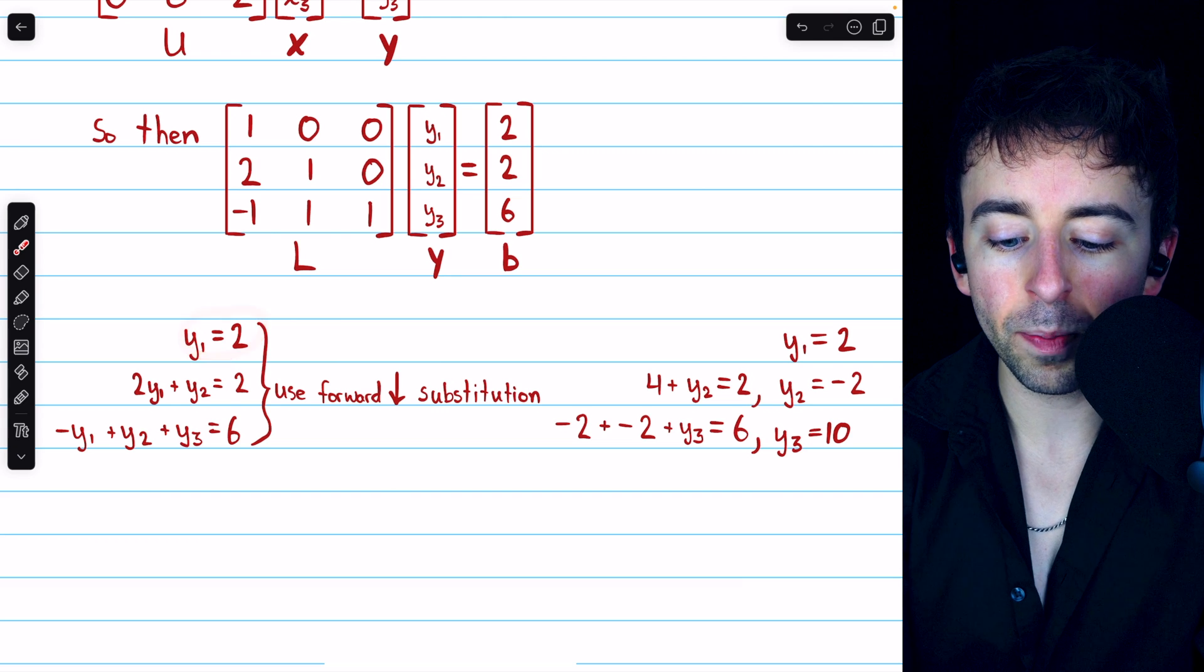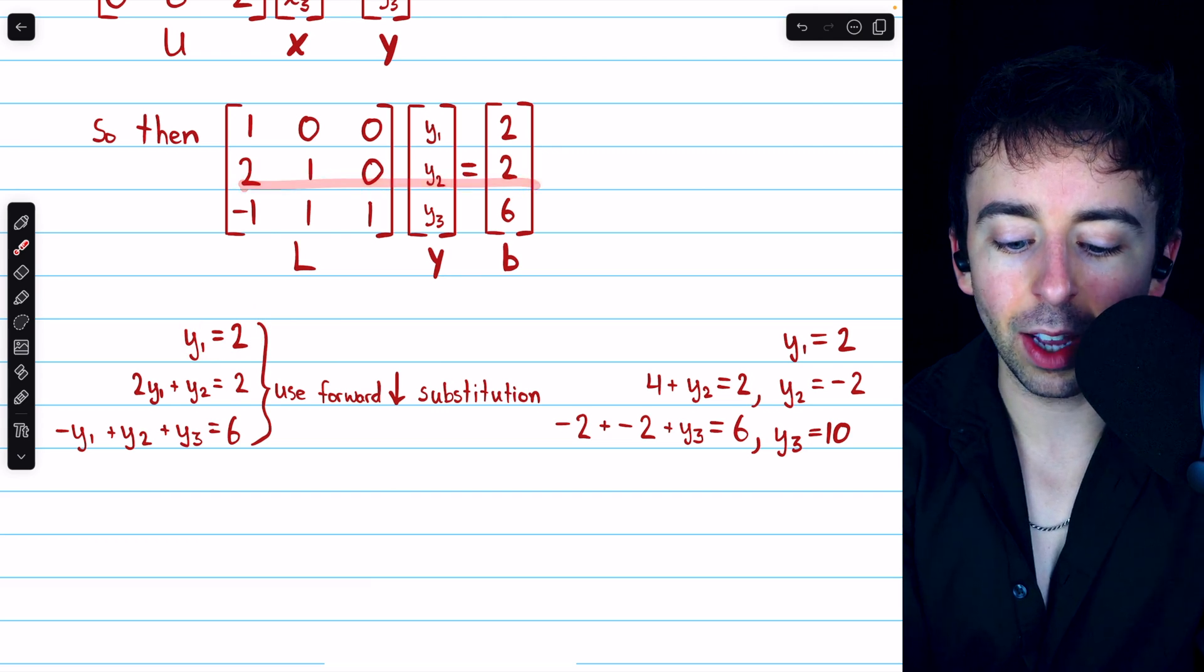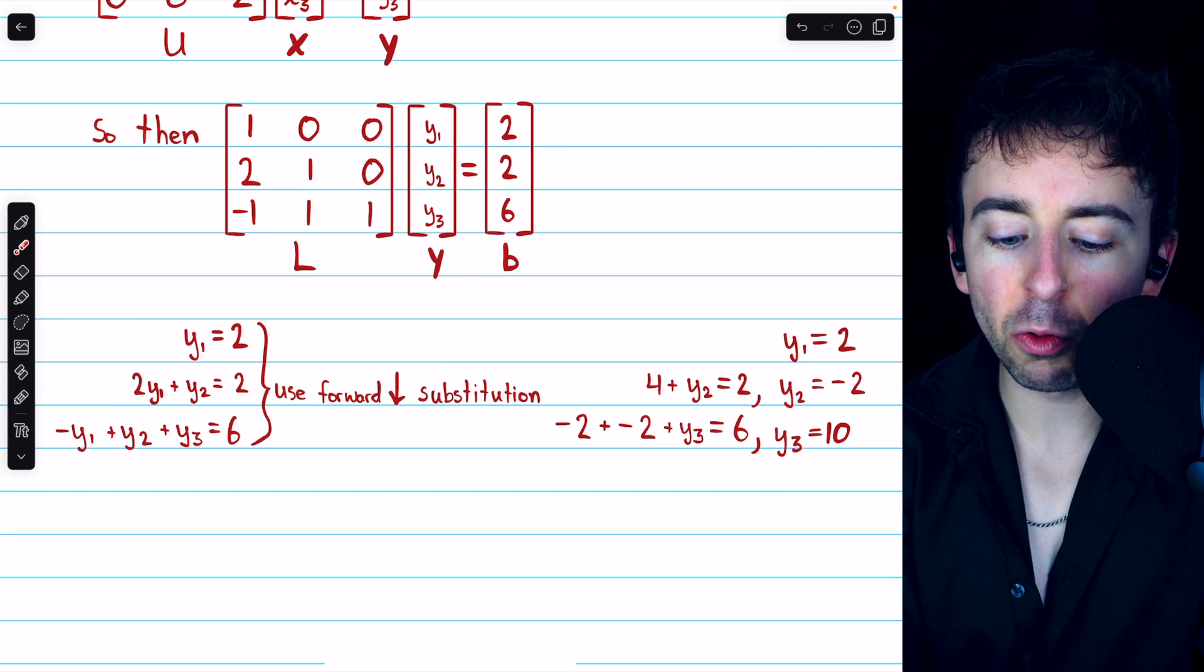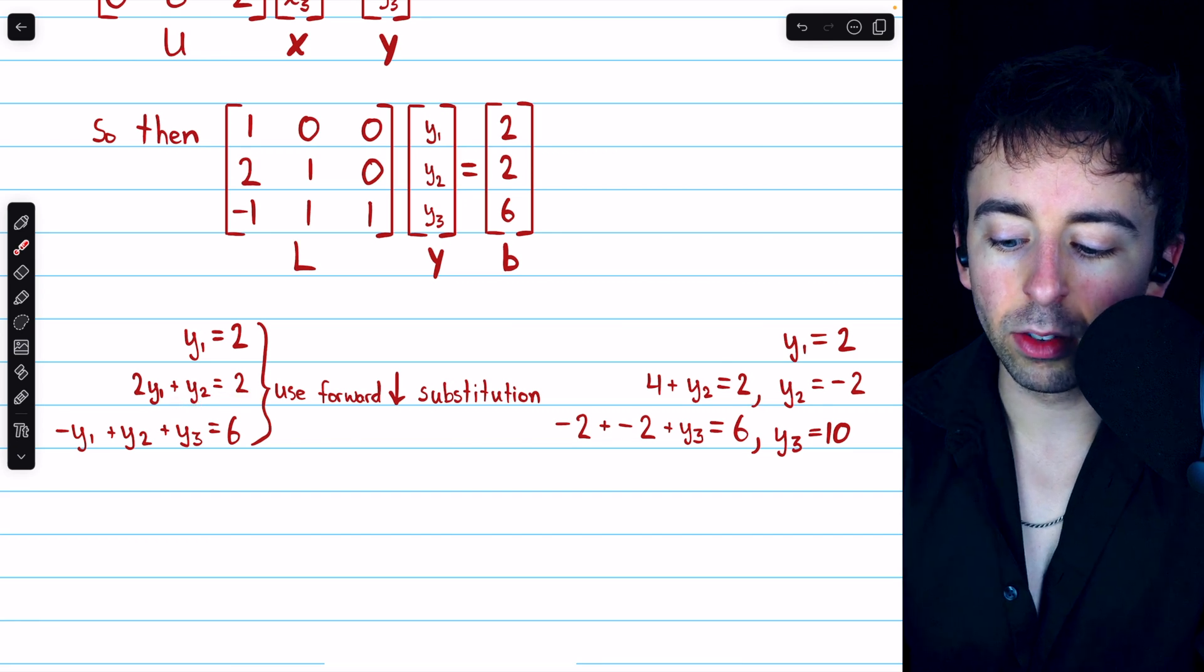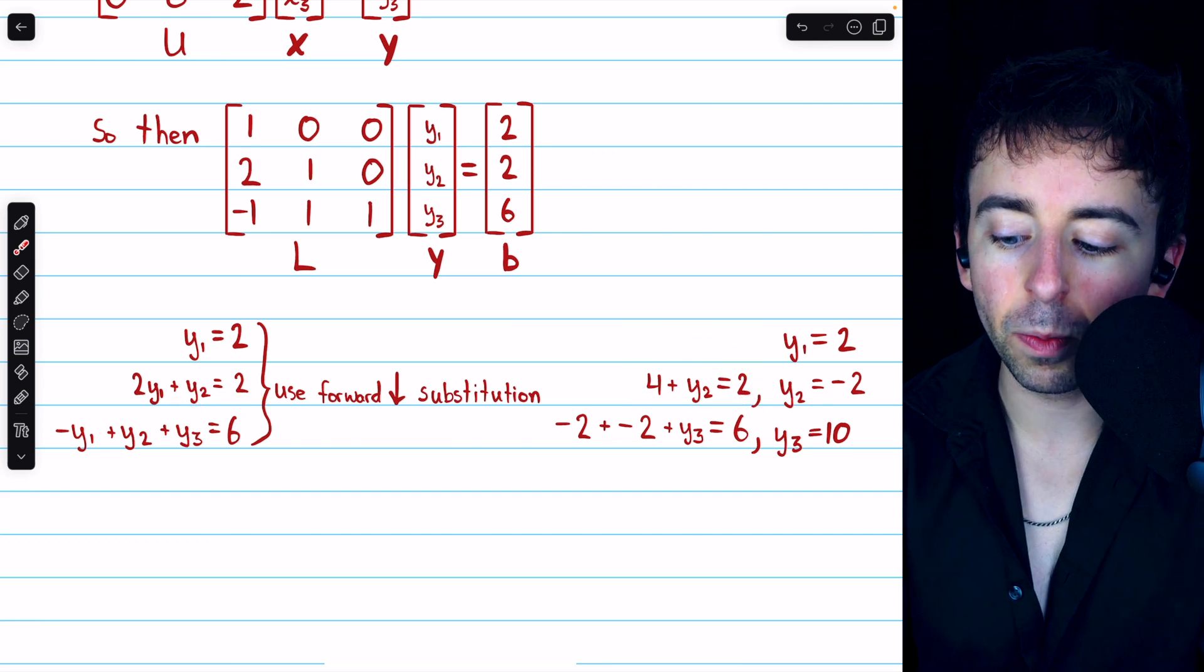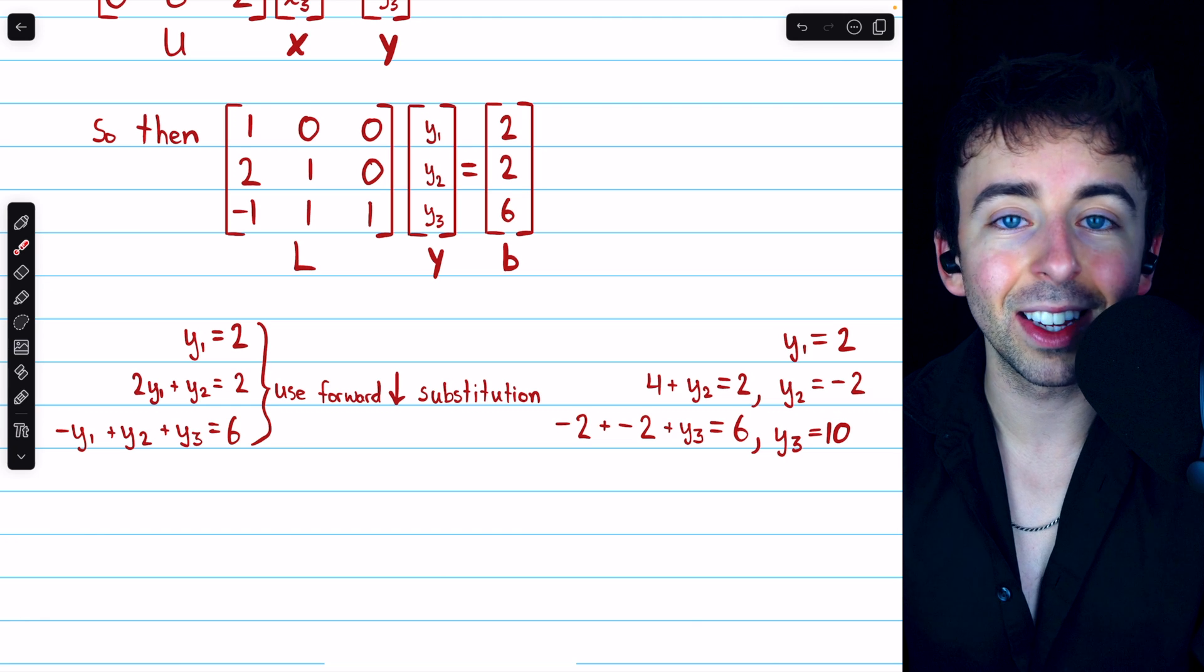Since we know that Y1 equals 2, row 2 gives us this equation, and we can replace Y1 with 2. Thus, we have that 2 times 2, which is 4, plus Y2 equals 2, so 4 plus Y2 equals 2, and so Y2 equals negative 2.